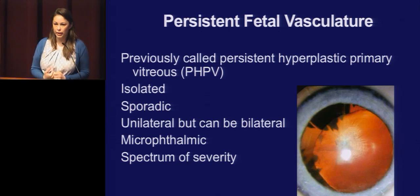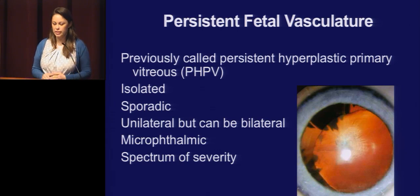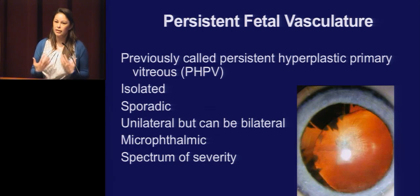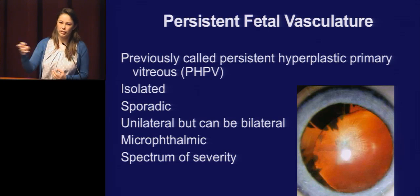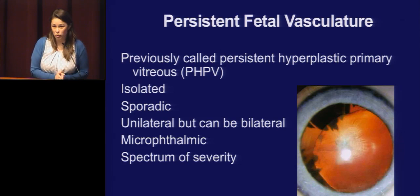These eyes are microphthalmic — they're smaller. The teaching is that if you have a PFV patient and the eye is not smaller, don't forget about glaucoma. This is a spectrum. I recently had a case where a patient had a bilateral cataract at four to five weeks old. Ultrasound looked totally normal, surgery went beautifully, but the next day they had vitreous hemorrhage along the canal — a mild PFV we couldn't even pick up on ultrasound. It happened in both eyes, but the patient did fine.